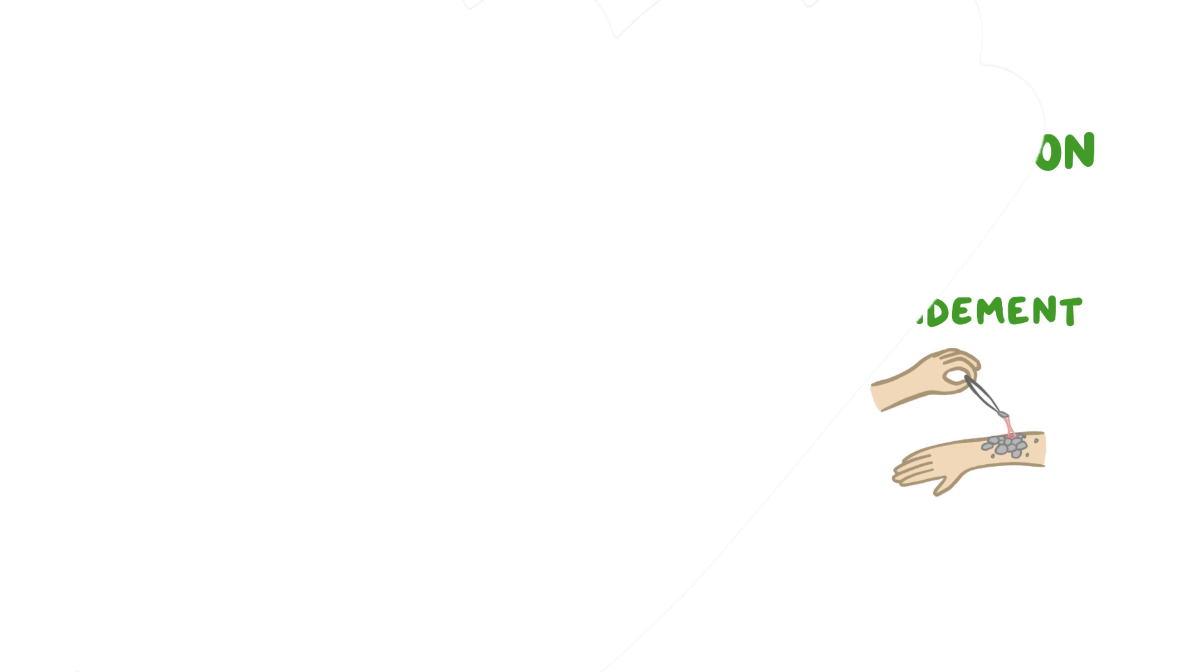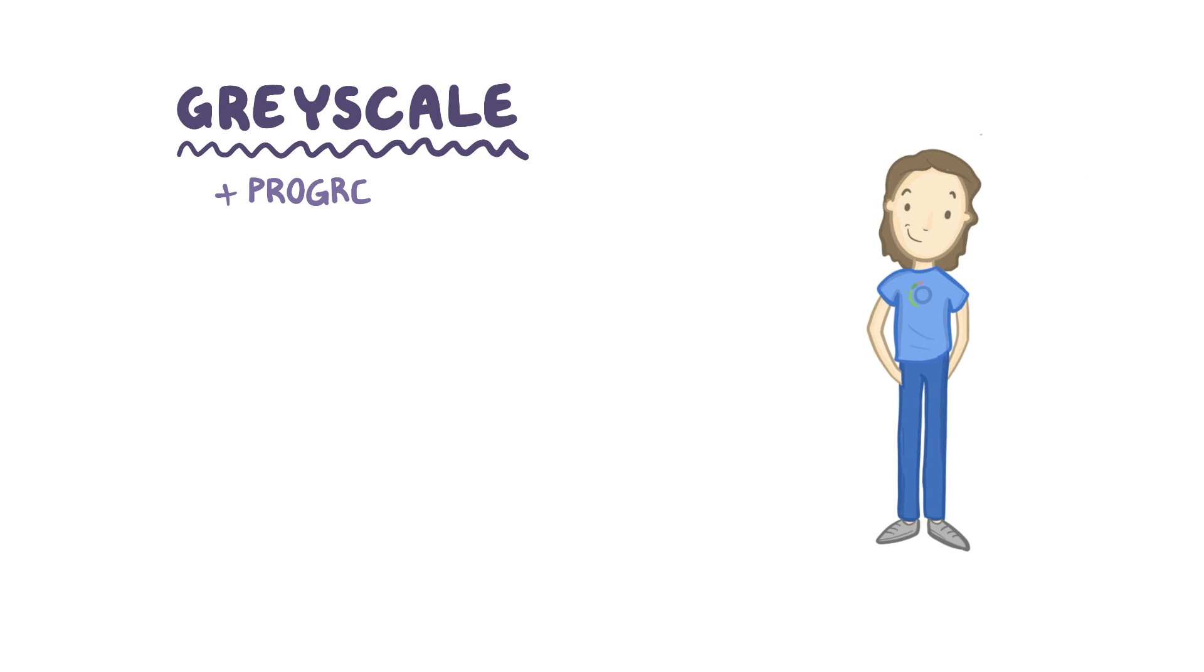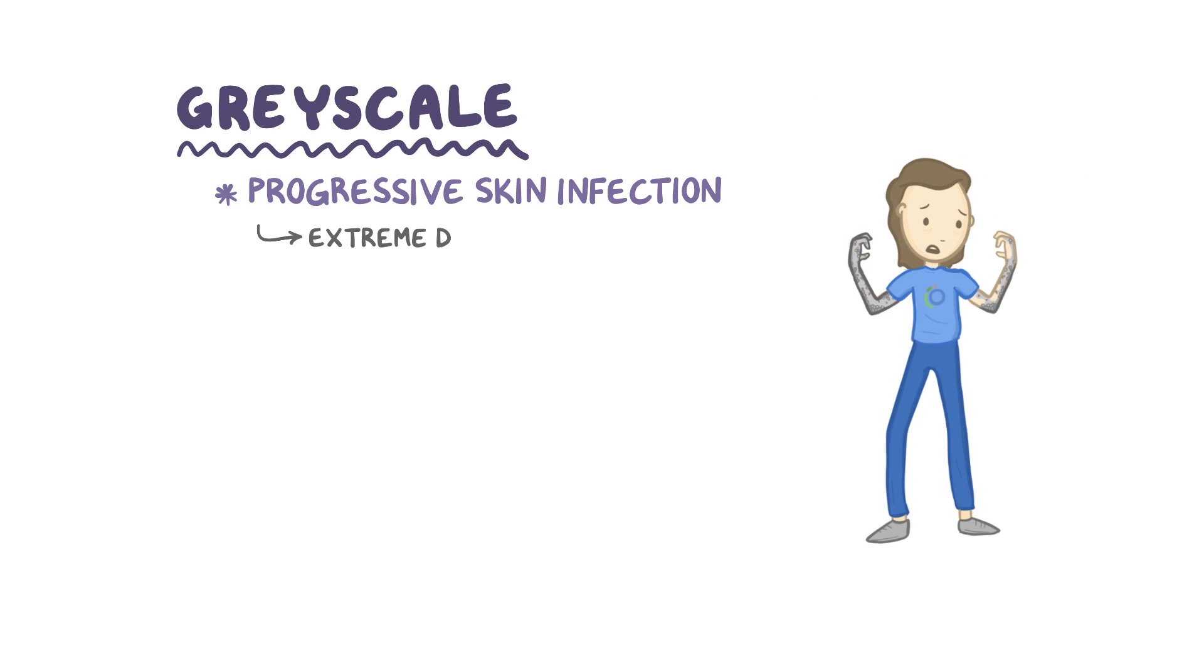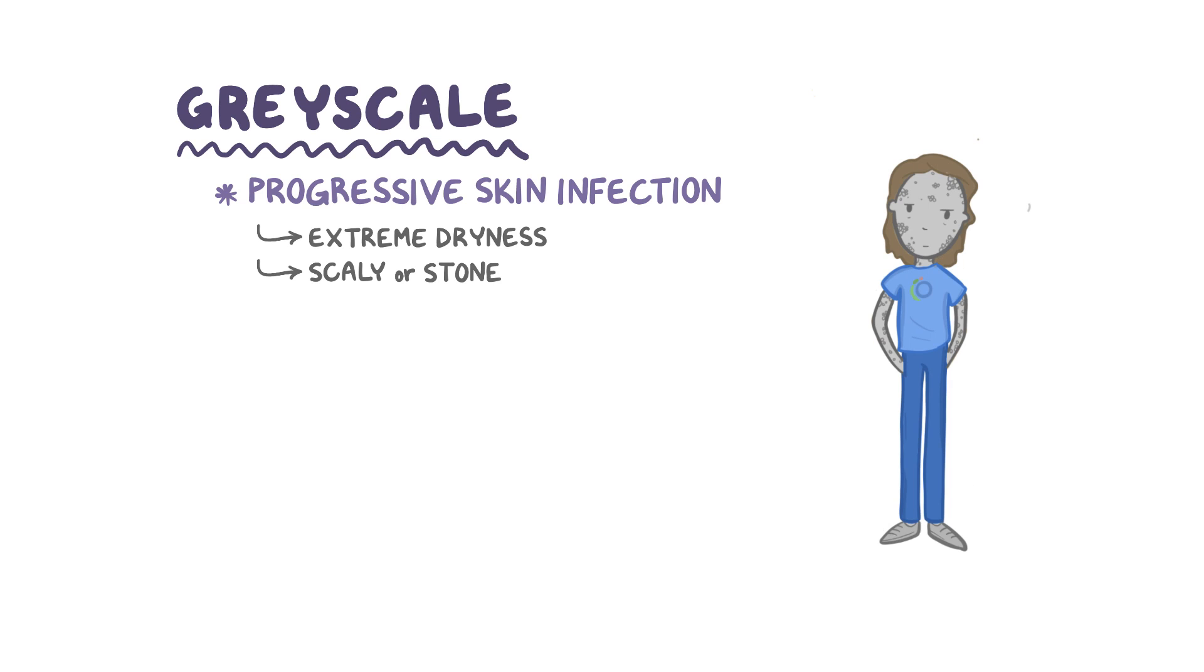As a quick recap, grayscale is a progressive skin infection that leads to extreme dryness and a scaly or stone-like appearance.